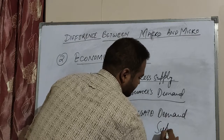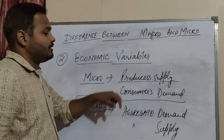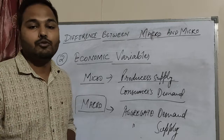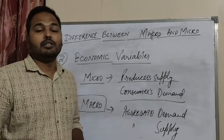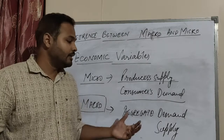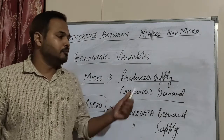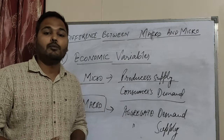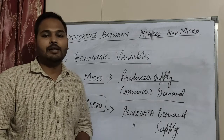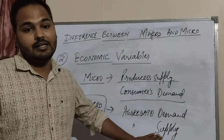But when we study macroeconomics, we study aggregate demand and aggregate supply. Aggregate demand is the sum of all demands — there are a number of consumers demanding, so we sum up all their demands and take it as aggregate demand. Aggregate supply means there are many producers, not just one, and we sum up their total output supplied in the market and take it as aggregate supply.